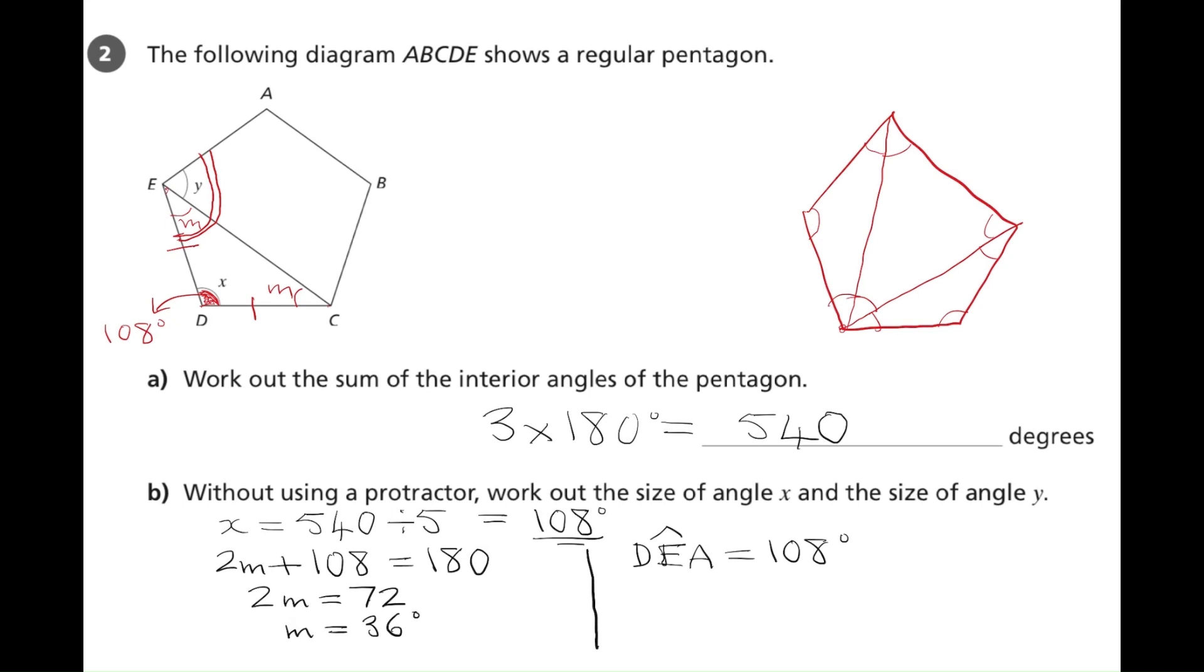We can see that y added to m gives us that angle DEA. So if we want to find the value of y, we need to take the DEA 108 degrees and subtract the value of m, which was 36. And this will give us a value for y of 72 degrees.